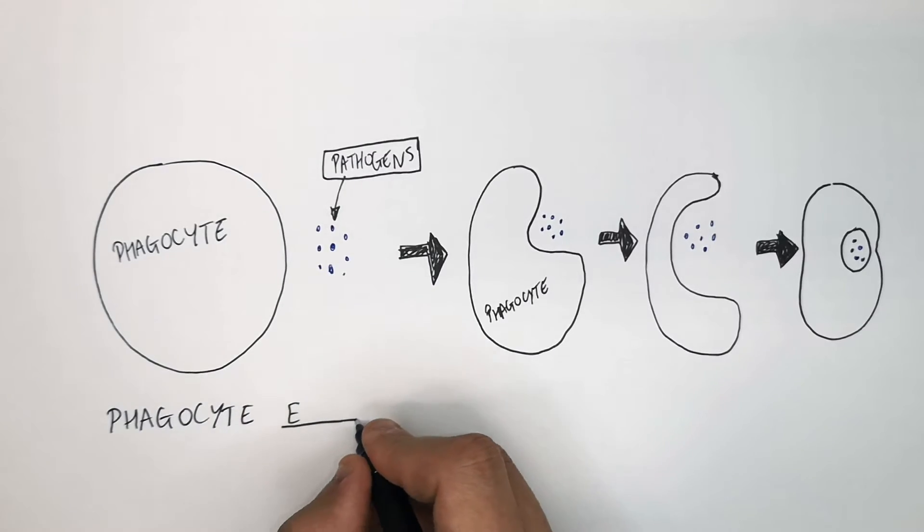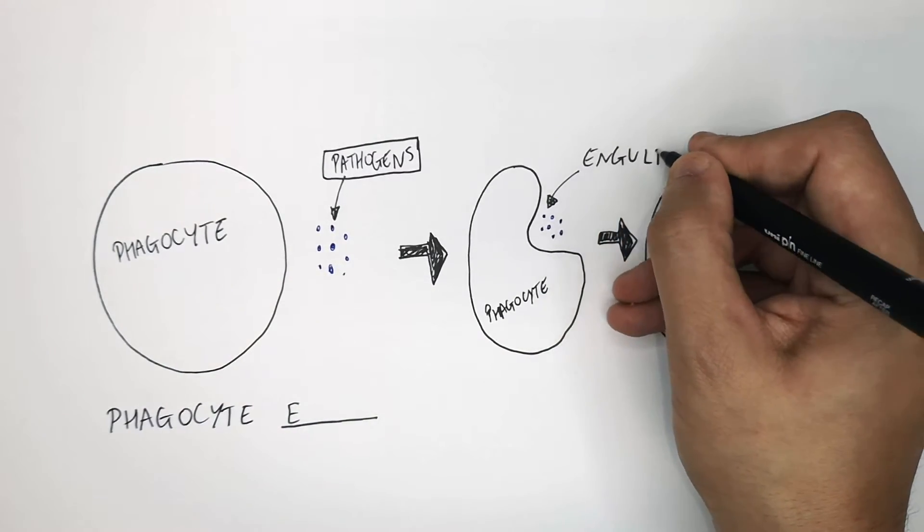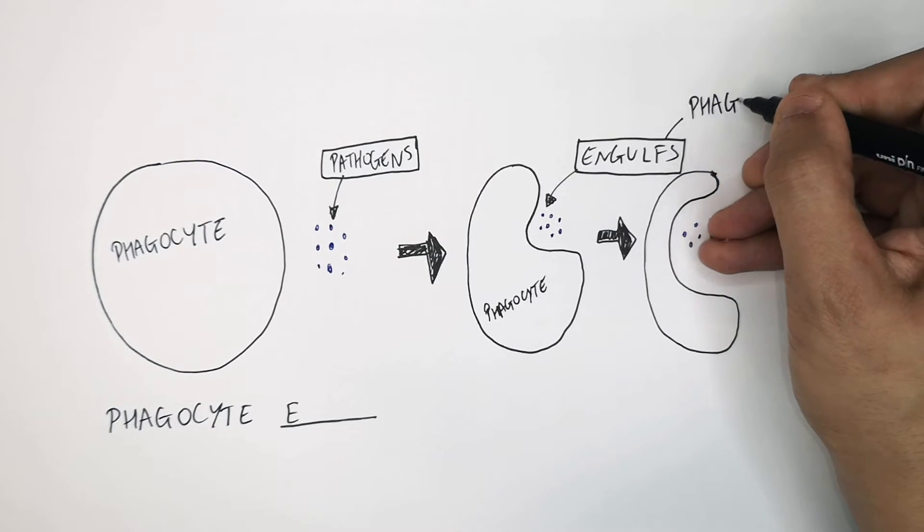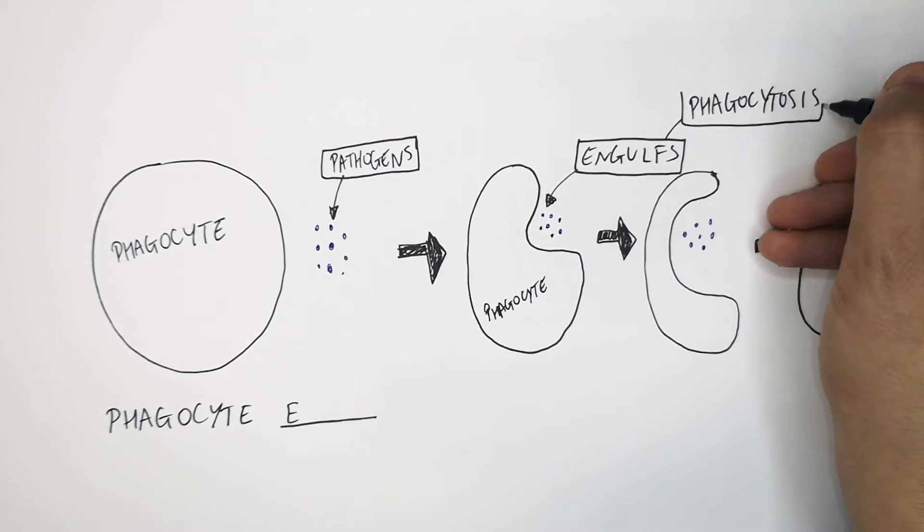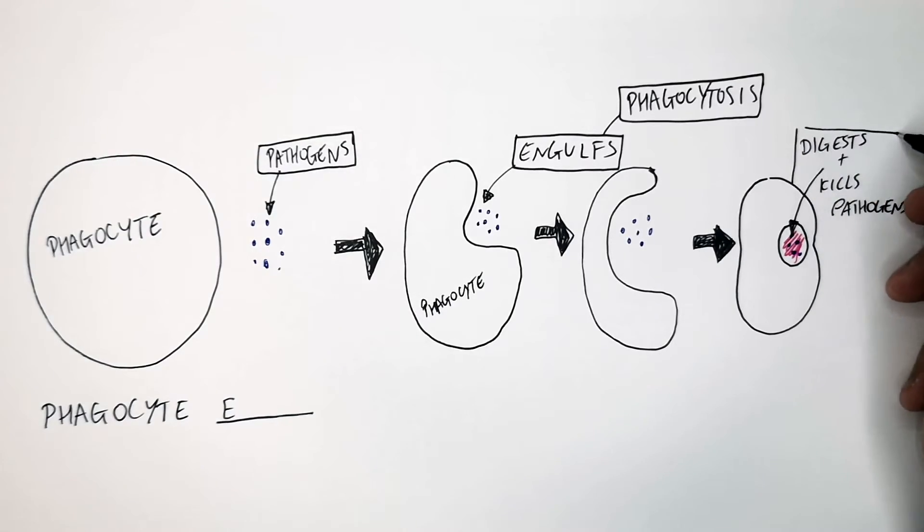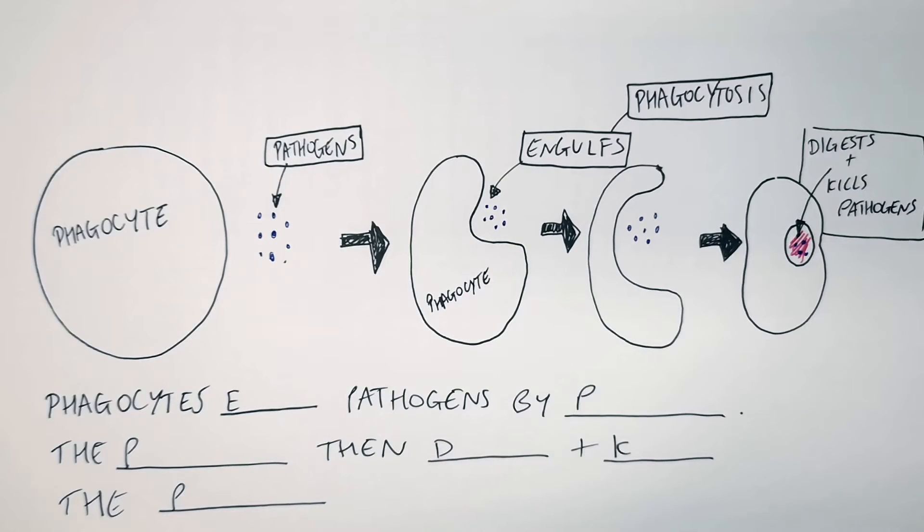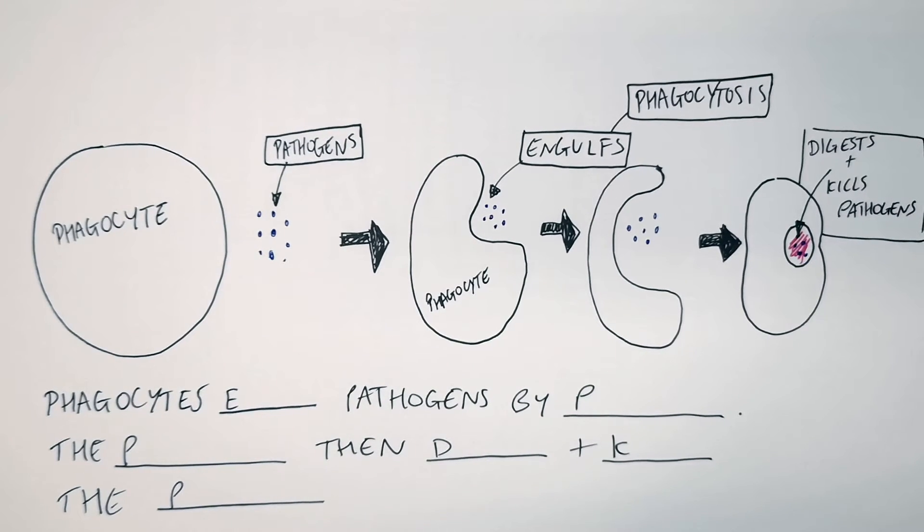A phagocyte, what a phagocyte does, engulfs the pathogens by phagocytosis, does not eat them. And then it digests and kills the pathogens. Pause the video here to practice using the key words. The answers will follow.